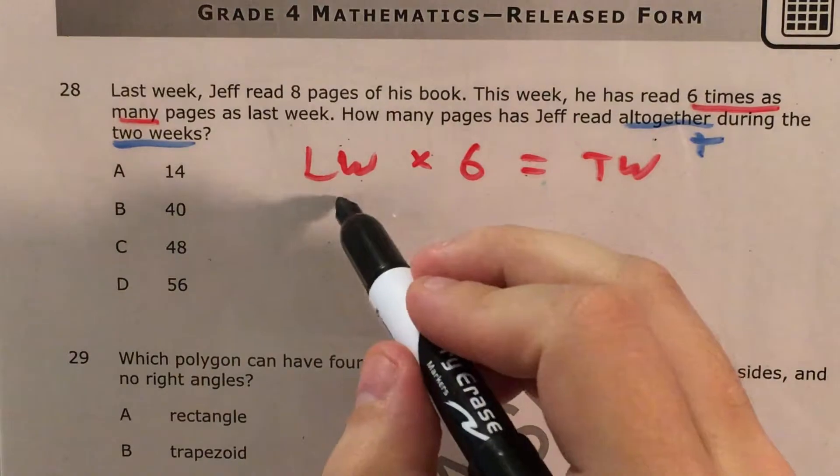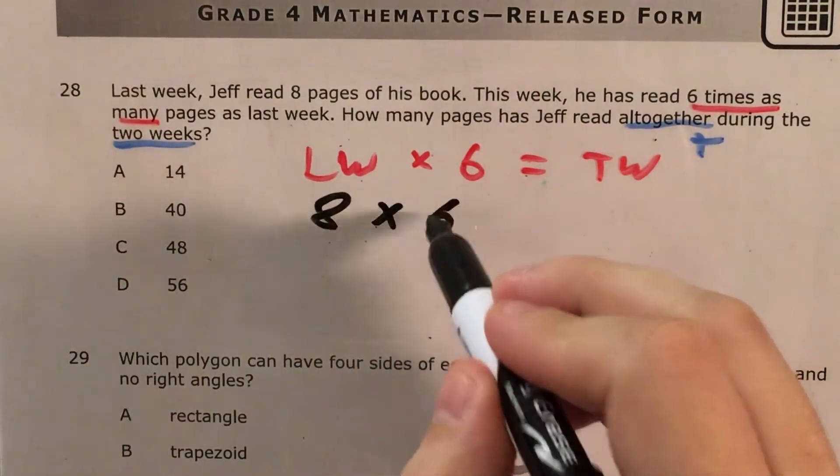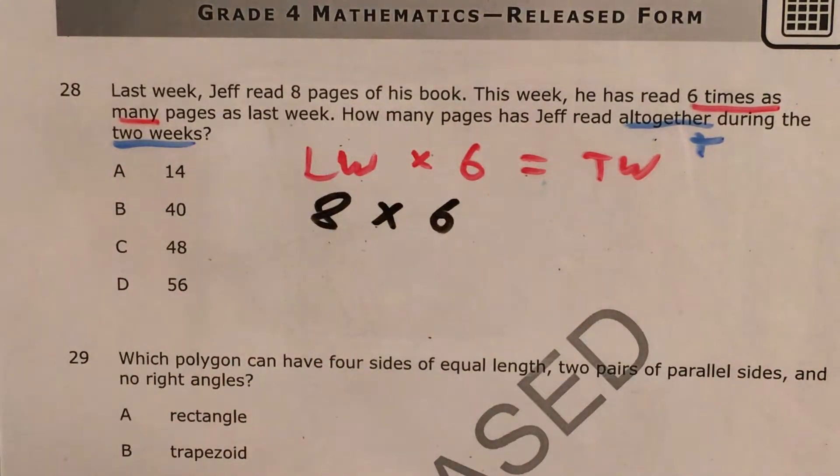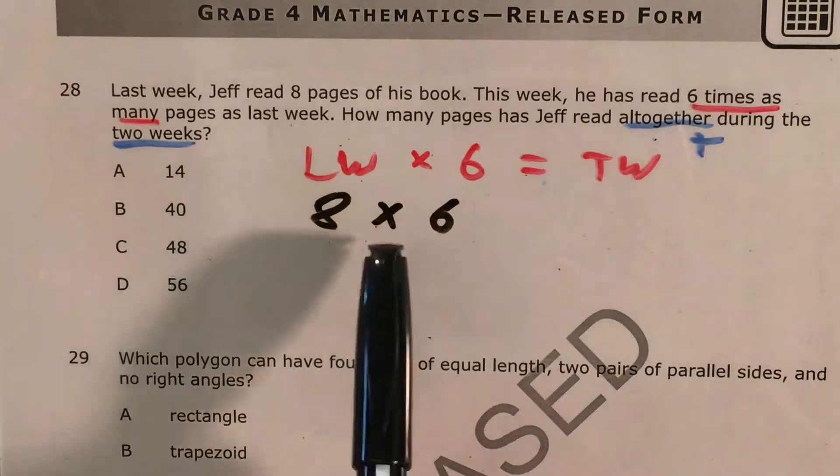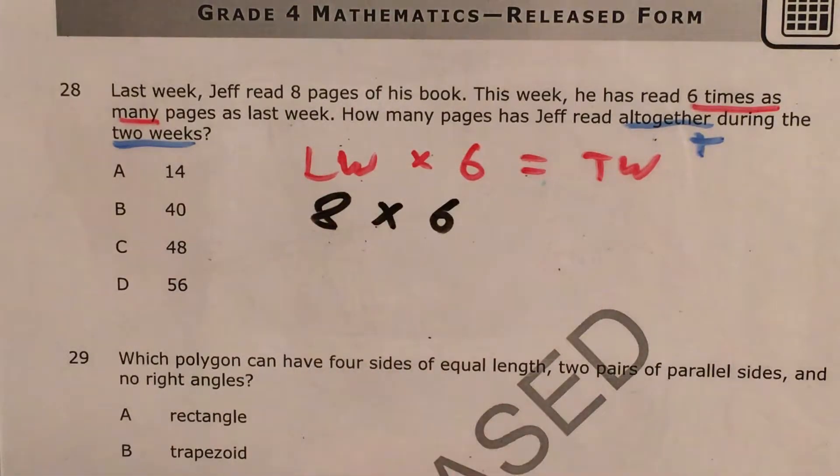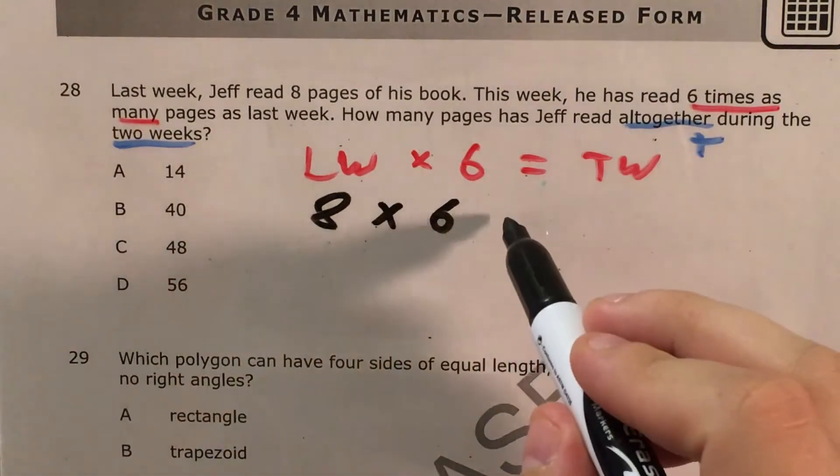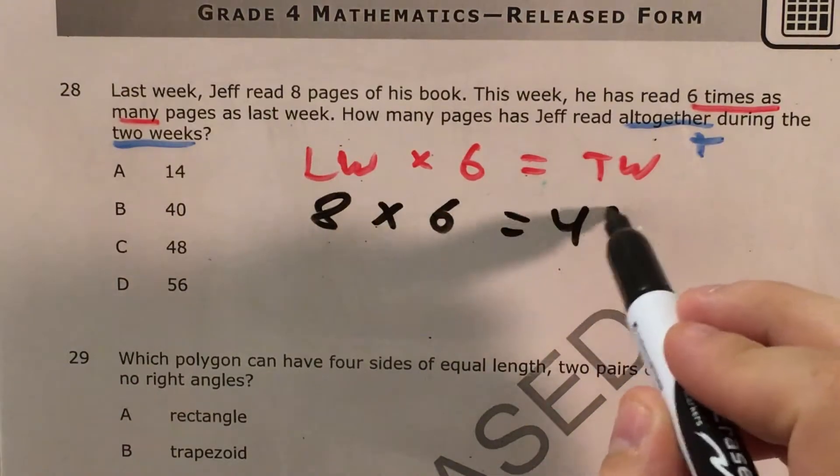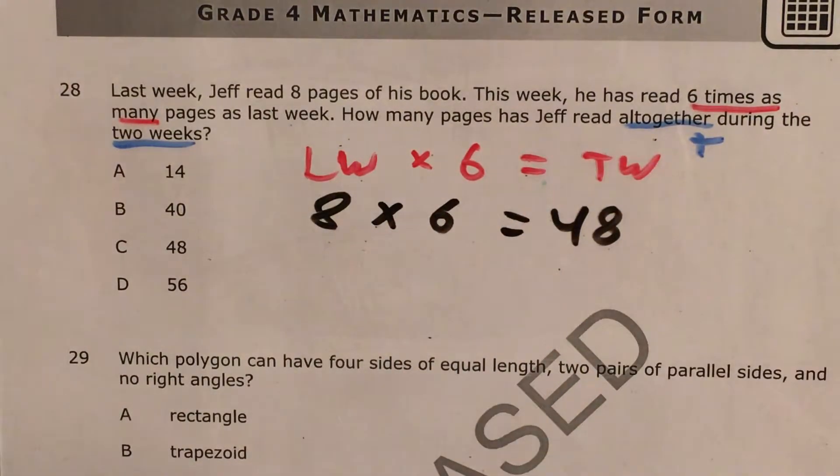Last week Jeff read eight pages of his book. So my last week number is going to be eight and now I need to multiply eight by six, and whether you're using a calculator or your times tables you should get that this week he read 48 pages.